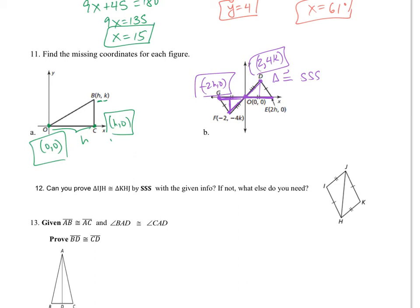For number 12, can you prove these two triangles are congruent by side-side-side? Yes, with the given info, because JH is congruent to itself by the reflexive property. So yes, we can prove congruence by side-side-side.